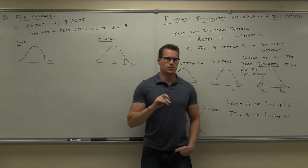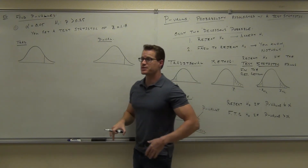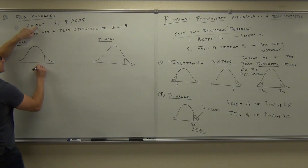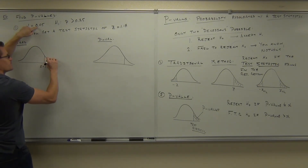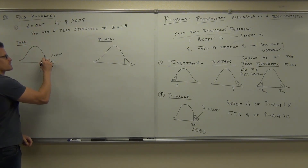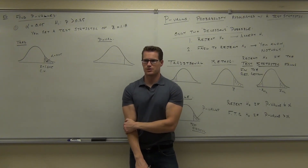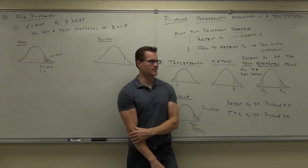Please watch carefully on the board because I'll ask you for both methods on your final exam. For the traditional method: you take your alpha of 0.05, look that up in the chart, and get a critical value of 1.645. This alpha is 0.05, and this critical value defines the rejection region.